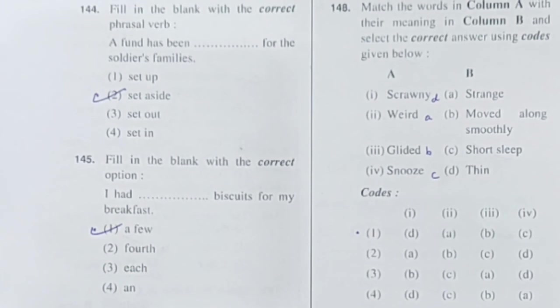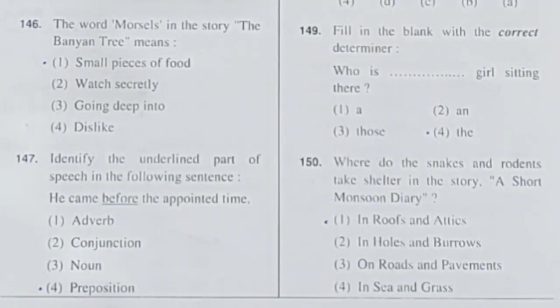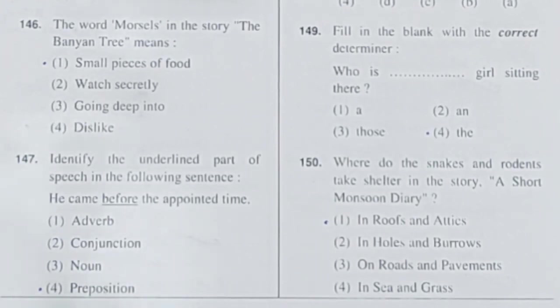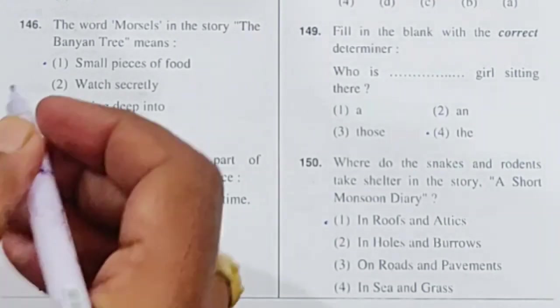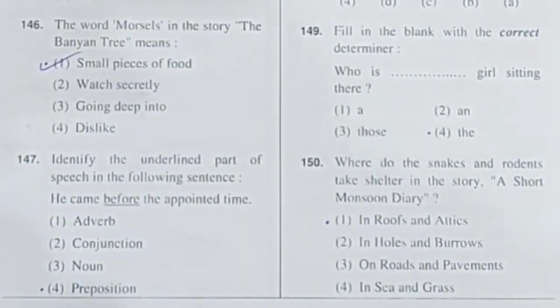Question 146: The word 'morsels' in the story 'The Banyan Tree' means small pieces of food. Option 1 is correct.